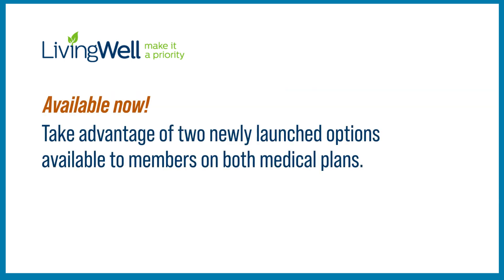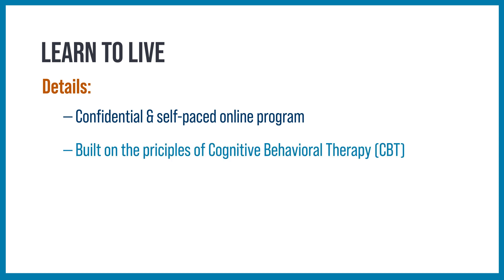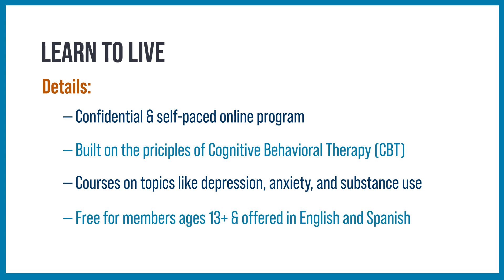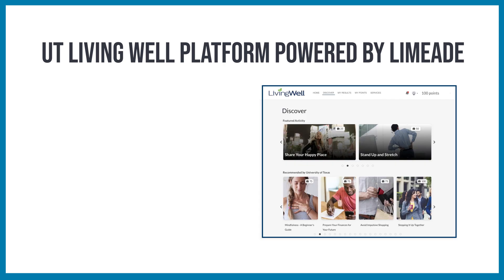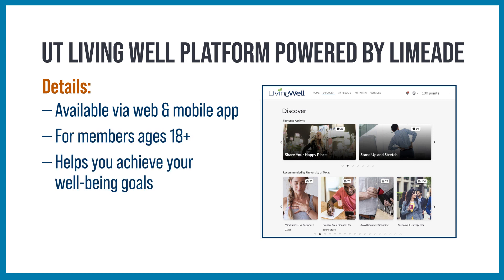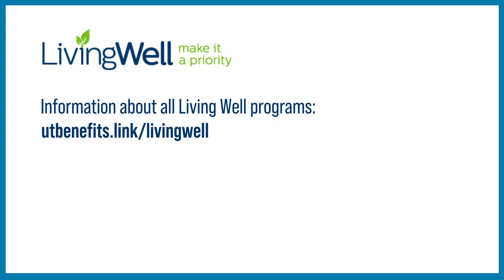You can also take advantage of two newly launched options. Learn to Live is a confidential, self-paced online program built on the principles of cognitive behavioral therapy. Their courses on topics like depression, anxiety, and substance use help people learn to understand and overcome their challenging thoughts and feelings. The program is free, available to members ages 13 and up, and offered in English and Spanish. The UT Living Well Platform, powered by LimeAid, is available via web and mobile app for members ages 18 and up. The platform helps you achieve your physical, emotional, financial, and work well-being goals, offering personalized activities and opportunities to connect with colleagues. Visit utbenefits.link/livingwell for information about all available wellness programs.